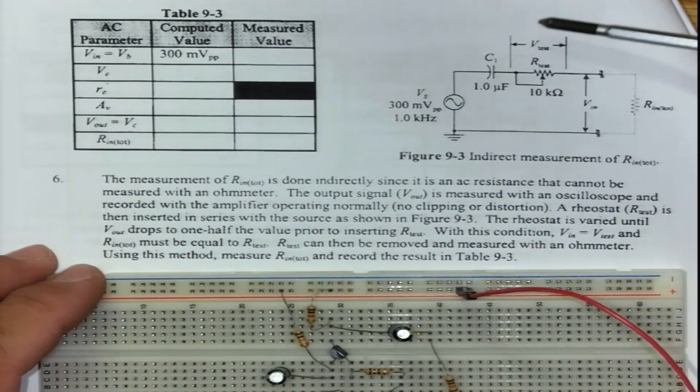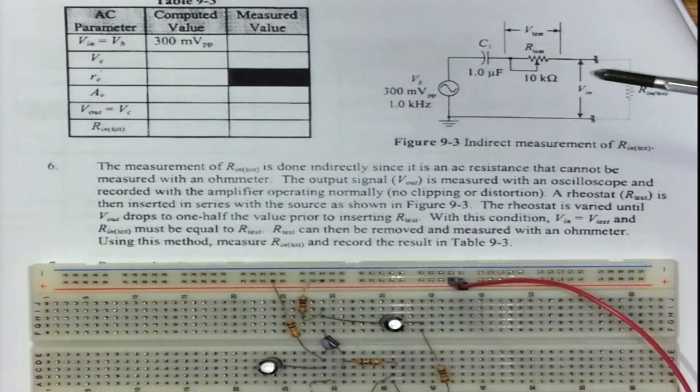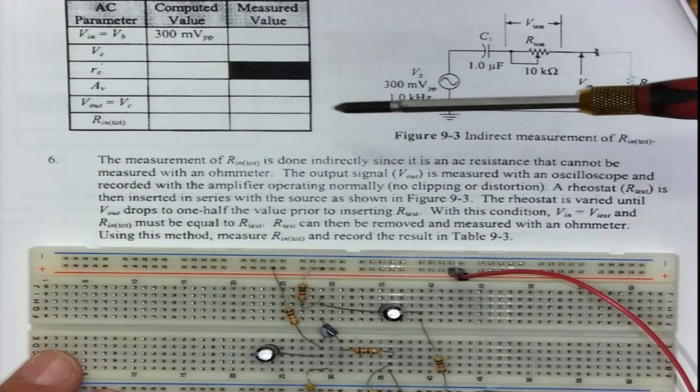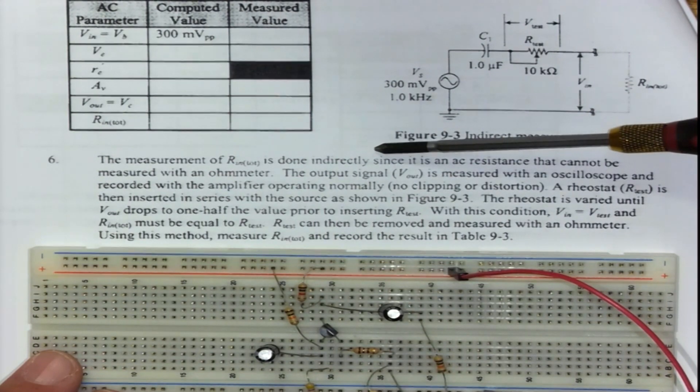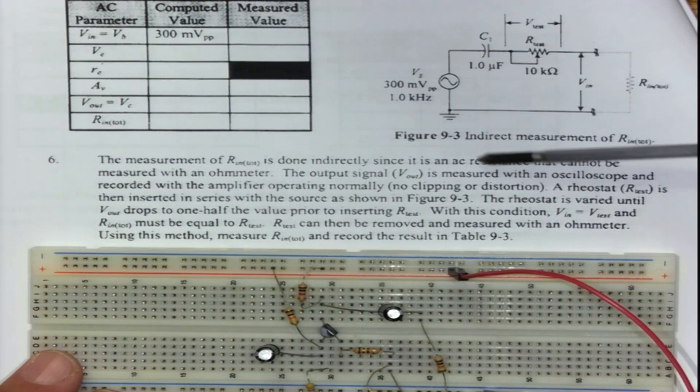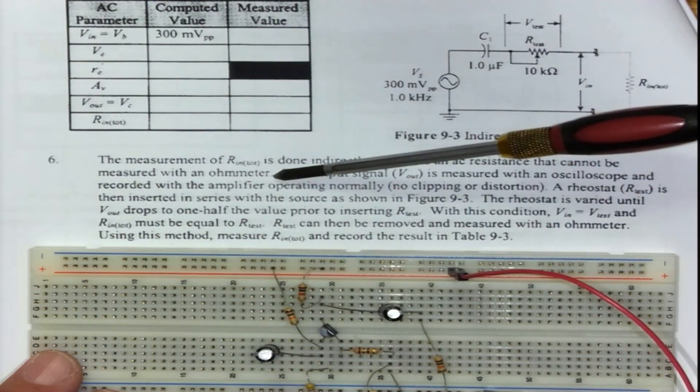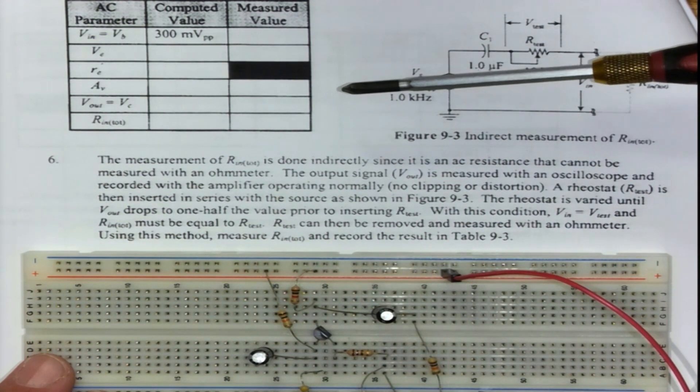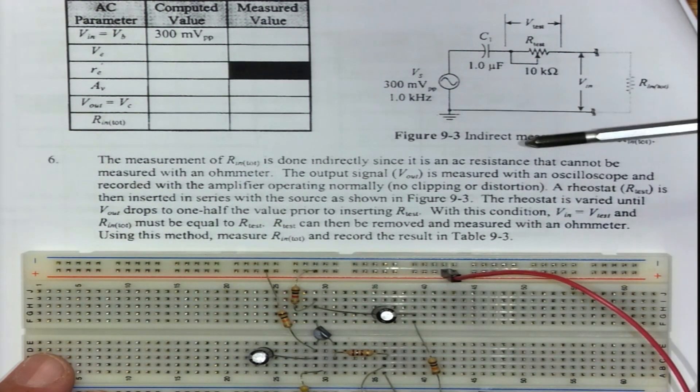The measurements have been done and we reach step six of the instructions. Step six says the measurement of Rin total is done indirectly, since it's an AC resistance and cannot be measured with an ohmmeter.